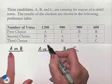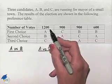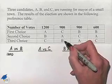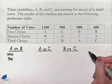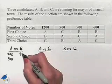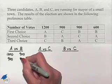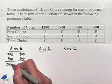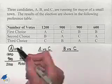We'll start with candidate A versus candidate B. In our first column we note that A is ranked above B so we're going to apply the 1,200 votes to candidate A. In our next column A is also ranked above B. We'll apply the 900 votes to candidate A. In the third column B is ranked above A so we're going to apply the 900 votes to B. And in our last column B is ranked above A so we'll apply the 600 votes to candidate B. Now let's total this. We have 2,100 for A, 1,500 for B. So we'll declare A the winner in this pairwise competition.